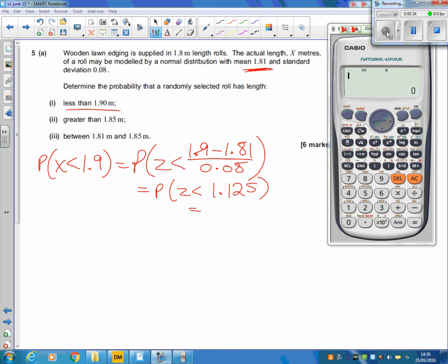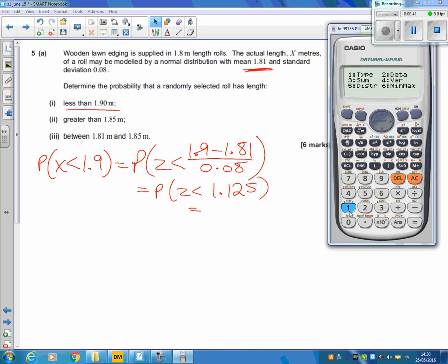And now, let's show you the calculator. We've got our probability here of 1.125. Just tap that in there, and you can see that's giving us 0.86971. And then you can round that to three figures as well if you want.